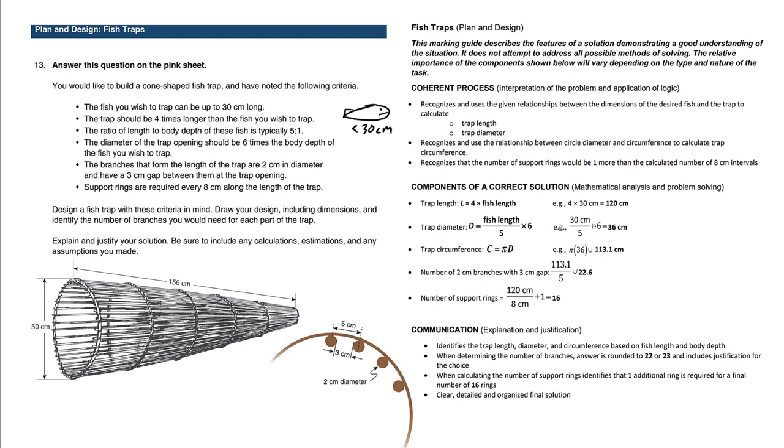The trap should be four times longer than the fish you wish to trap. Okay so here's the fish trap. Now be careful, I use this diagram from a previous case study, we can't mix those up. So let's erase this result here. So four times longer is 30 times 4 which is 120 centimeters.